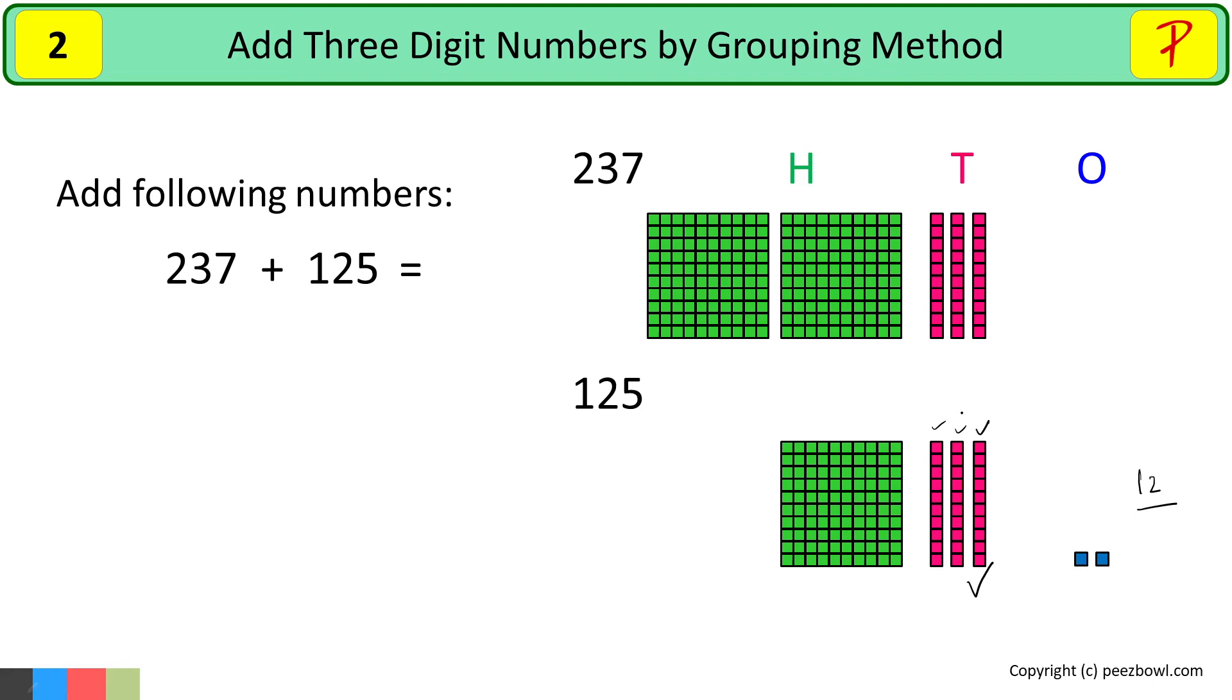Now let us move three tens from 237 to 125. Now at the tens place, we have six tens. At the ones place, we have two ones.